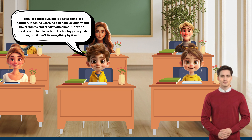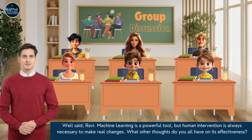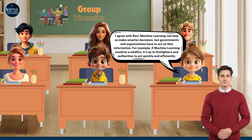Technology can guide us, but it can't fix everything by itself. Well said, Ravi. Machine learning is a powerful tool, but human intervention is always necessary to make real changes. I agree with Ravi. Machine learning can help us make smarter decisions, but governments and organizations have to act on that information. For example, if machine learning predicts a wildfire, it's up to firefighters and authorities to act quickly and efficiently.